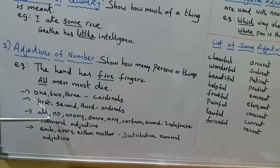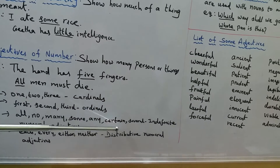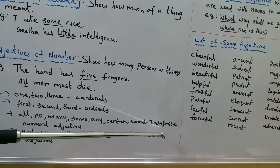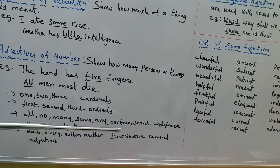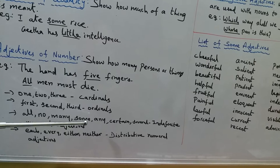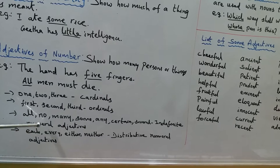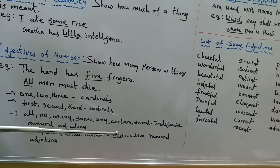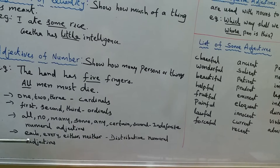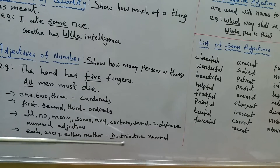Next, words like no, many, some, any, and several fall under the category of indefinite numeral adjectives. They are called 'indefinite' because an exact number has not been specified. Words like all, no, many, some, any — since no exact number is available — they are indefinite numeral adjectives.